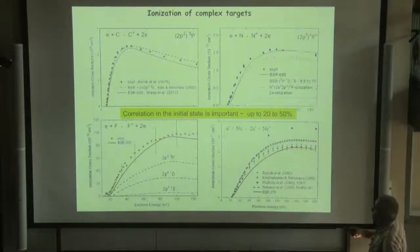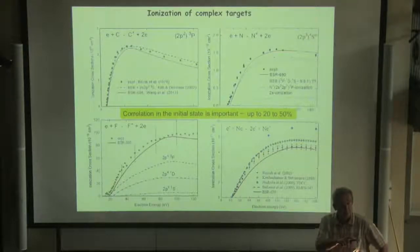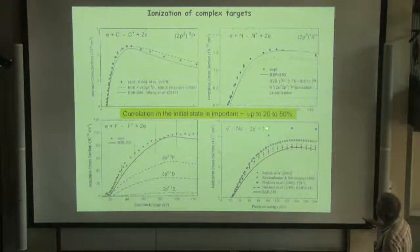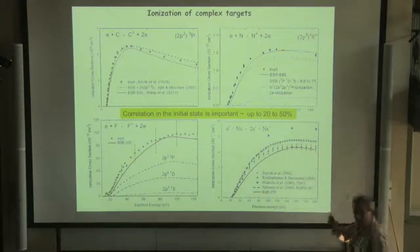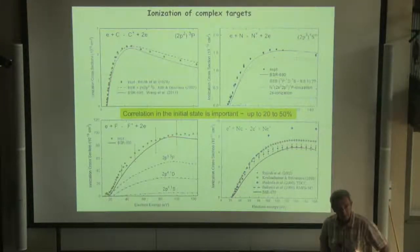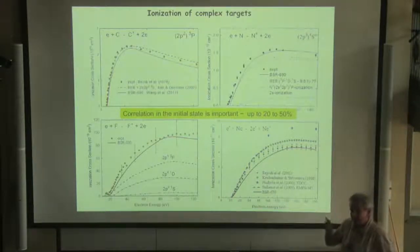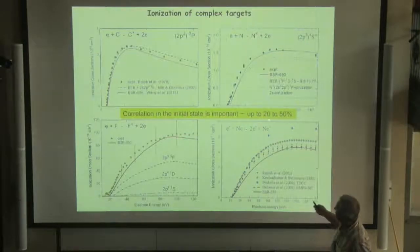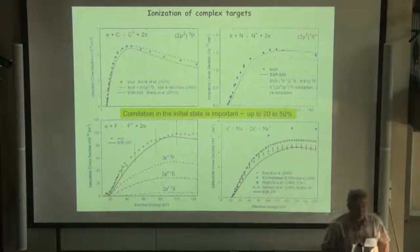But I want to remark, as I remarked for a previous talk by Holden, here, for example, results of time-dependent calculations. We explained it because we use simple functions. Here, everything - we are using the very correlated initial state functions, and this provides from 20 to 50 percent increase in total ionization cross-sections.